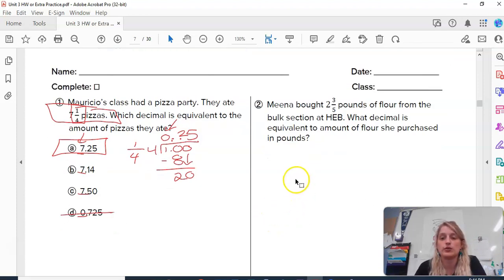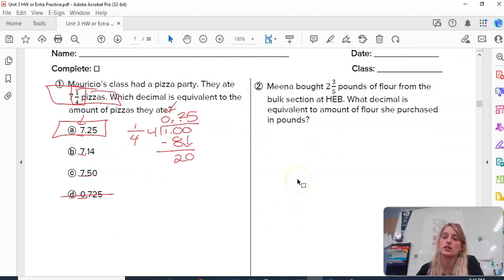So Mina bought two and three-fifths pounds of flour from the bulk section at HEB. What decimal is equivalent? So option one is you can say, okay, I know it's going to be two point something, and I'm only figuring out that decimal amount. Or option two is you can change your entire mixed number into an improper fraction and then divide that.